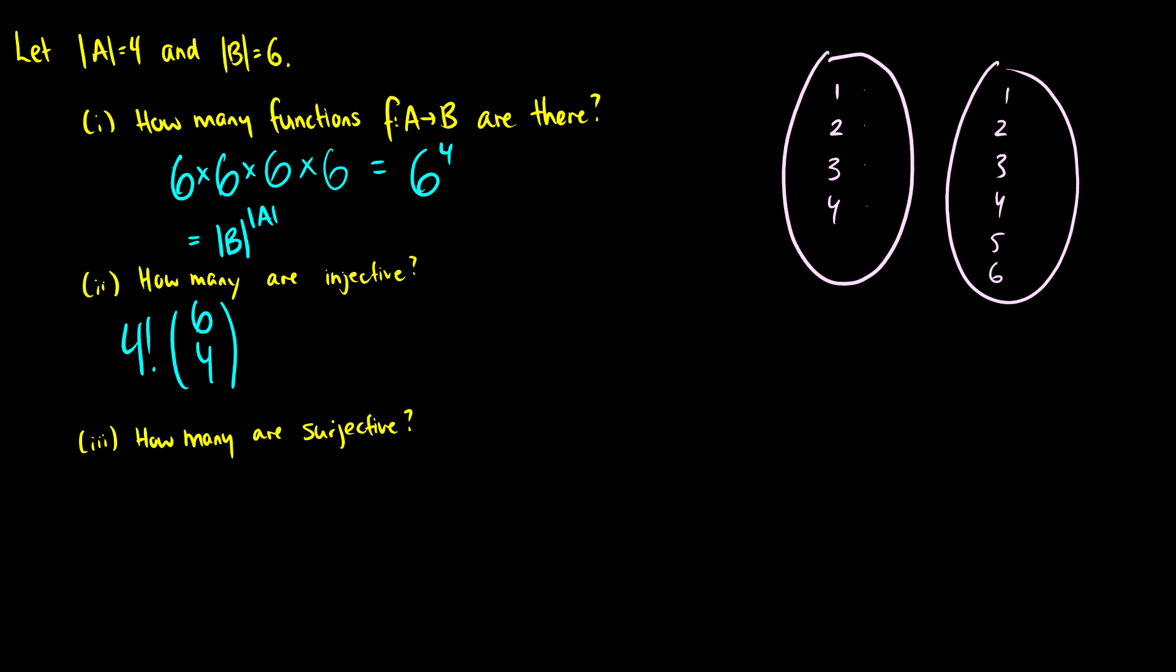So our end result is going to be four factorial times six choose four, and this is the same thing as six factorial over two factorial. If I expand the six choose four we're going to get six factorial over two factorial four factorial, then we multiply it by four factorial. The four factorials cancel and we're left with six factorial over two factorial.